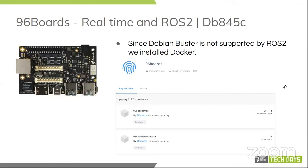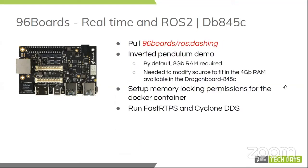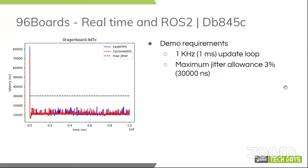So you can use these images with these boards or any ARM64 boards you might want to use. Following that, we pulled the ROS Dashing image, and then had the same issue as before — the pendulum demo needed 8 GB of RAM but there are only 4 available on the RB3 Key. We modified the code on the pendulum demo to limit the amount of RAM required, and spent a little bit of time looking into setting up memory locking conditions and permissions for the Docker container. We had the same results as with the HiKey 970 — both FastRTPS and Cyclone DDS stay well below the maximum jitter for the inverted pendulum demo, meaning we can start developing soft real-time applications on both boards for ROS2.